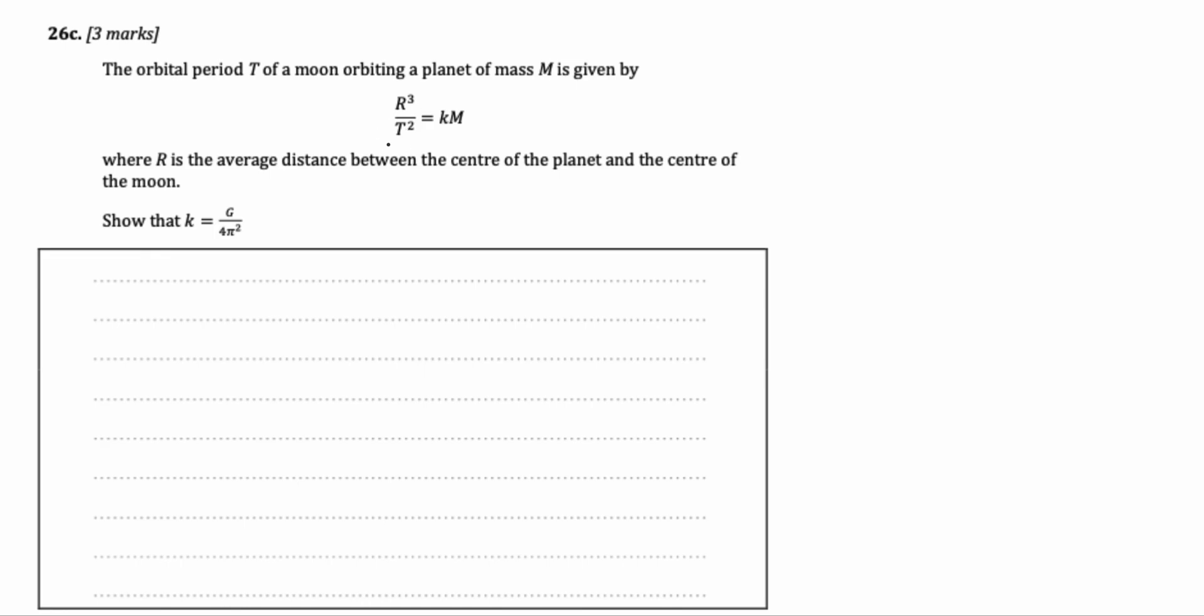Kepler's third law actually is t square is equal to 4pi square r cubed over gm. And why is this important? Because we can substitute the equivalent expression for t square and do some cancelling out to equate for what we need to find. But to use Kepler's third law, we first need to derive it. Now, I've derived it in a previous video, but I'll derive it again for the purpose of answering this question.